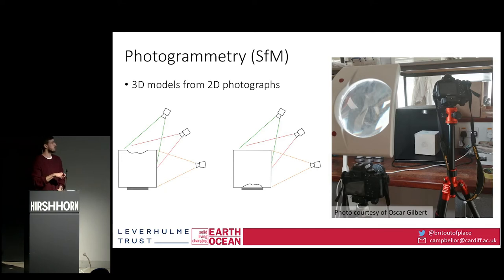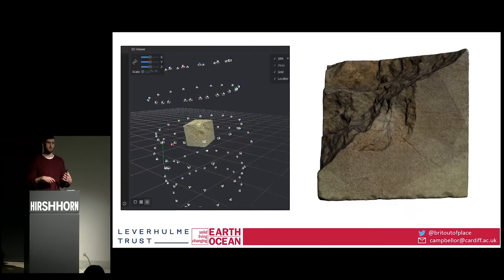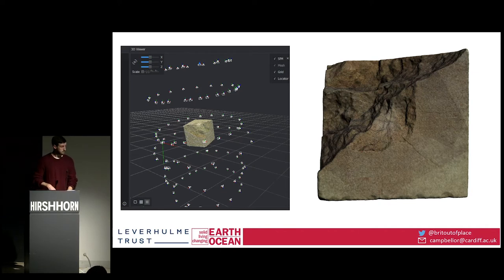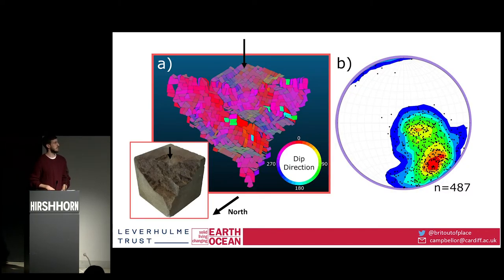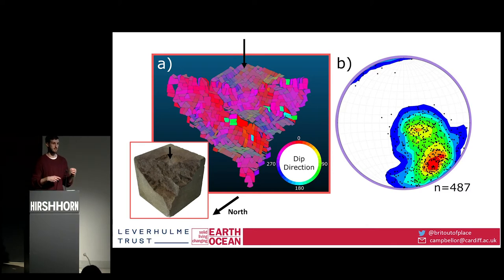We take a picture every 10 to 15 degrees of rotation from three orientations, flip the block over and do it again. We put this into photogrammetry software which reconstructs the camera positions, generates a depth map, and produces textured 3D meshes which we can export into other programs and take quantitative measurements from. I used a program called Cloud Compare — it's open source and freely accessible. I used a facet detection algorithm which simplifies the geometry of our mesh, breaking it down into smaller planes called facets, and it gives me an orientation of each in 3D space.